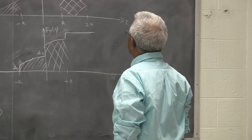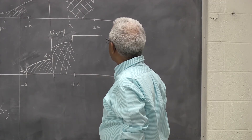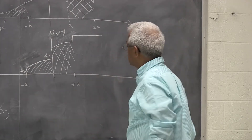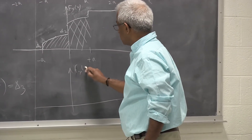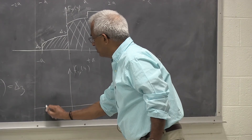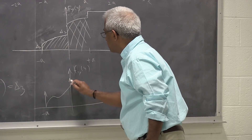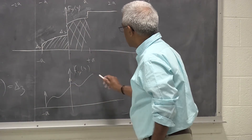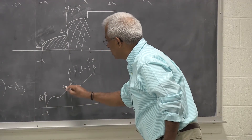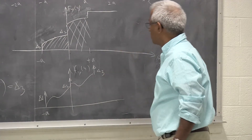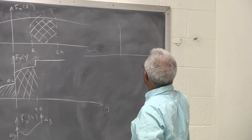And if you take the derivative of this, you can also see everything going on. So the derivative is going to be: an impulse at minus a, then a function piece, another impulse, another function piece, and then an impulse. So this is delta 1, delta 2, delta 3.